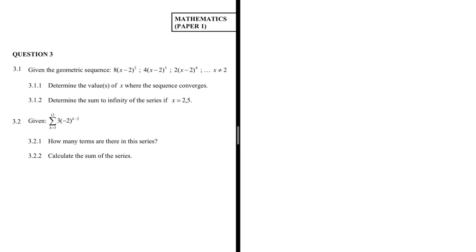We need to determine the values of x where the sequence converges. The condition we need is that the ratio r must be between minus 1 and plus 1. If r is between minus 1 and plus 1, our sequence converges.